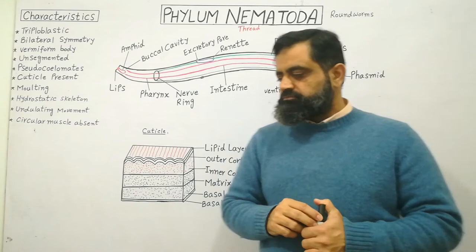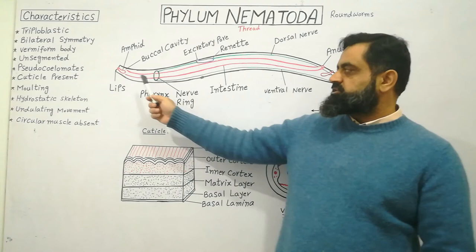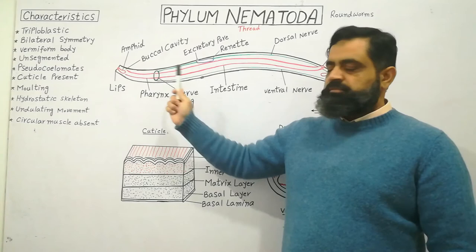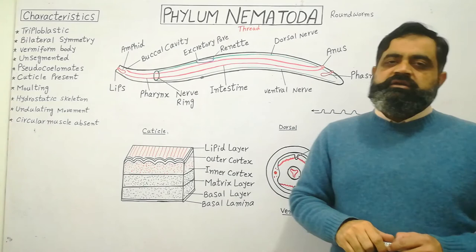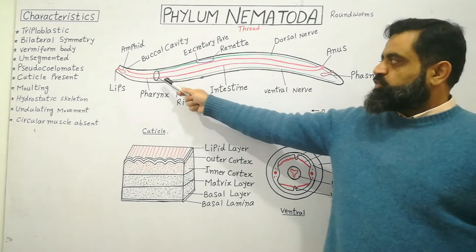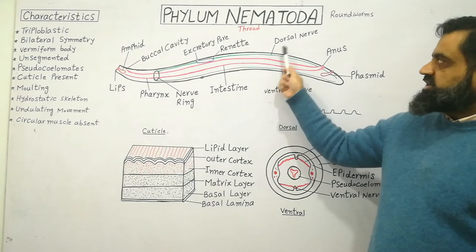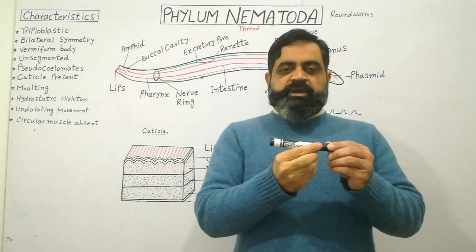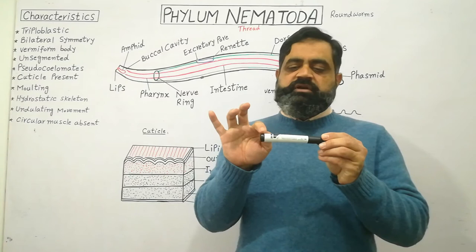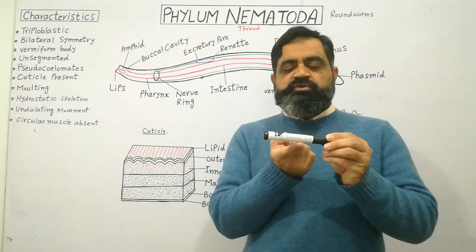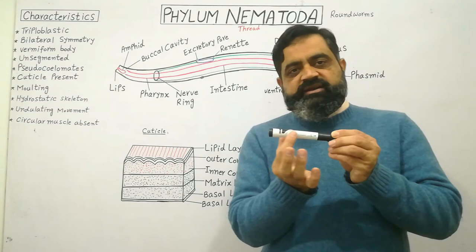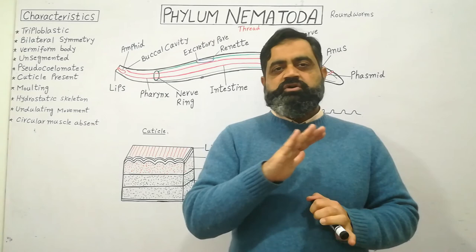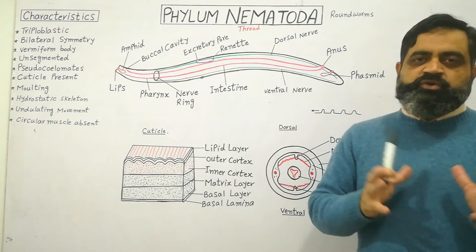Looking at the nervous system, just posterior to the foregut there is a ring of neurons known as the nerve ring, made up of ganglia. Four nerve cords arise from this nerve ring: one dorsal nerve, one ventral nerve shown in green, and two lateral nerves running on either side. These nerve cords run along the whole length of the body and are connected by commissure nerves, coordinating the whole body.